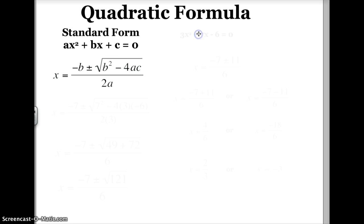Let's see how we can use this to solve a problem. The problem I'm going to solve is 3x² + 7x - 6 = 0. If I look at this problem, my A is 3, my B is 7, and my C is -6.